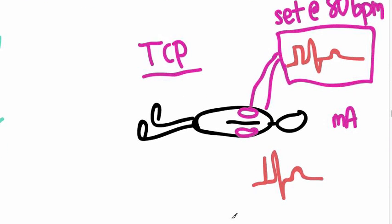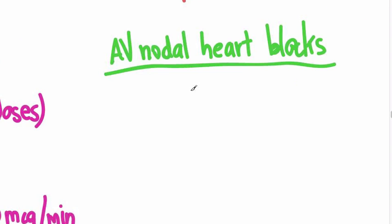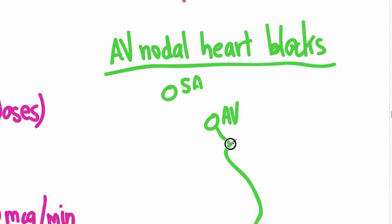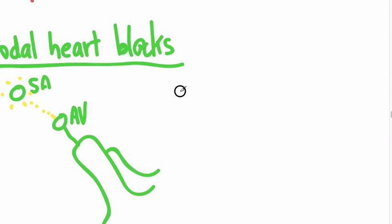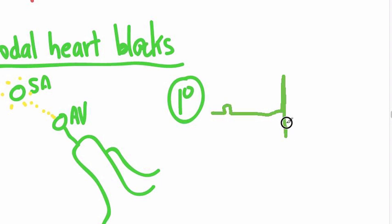Since we're talking about bradycardias, let's look at some AV heart blocks. The conduction system: the SA node fires and sends electrical activity down to the AV node, there's a delay, then it sends signals down the bundle of His to the heart. First-degree heart block involves a longer delay in the AV node. You'll see a P wave, then a really long PR interval — greater than 200 milliseconds, which is five boxes on the EKG — followed by the QRS.